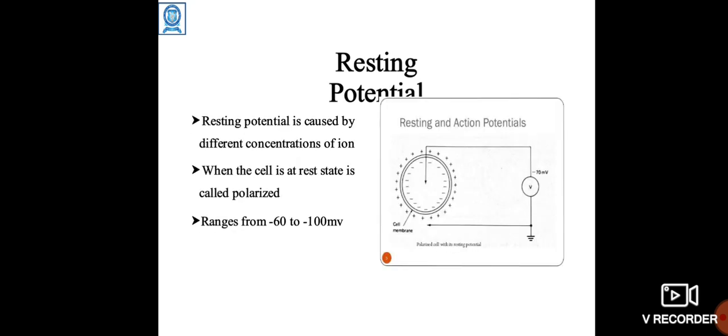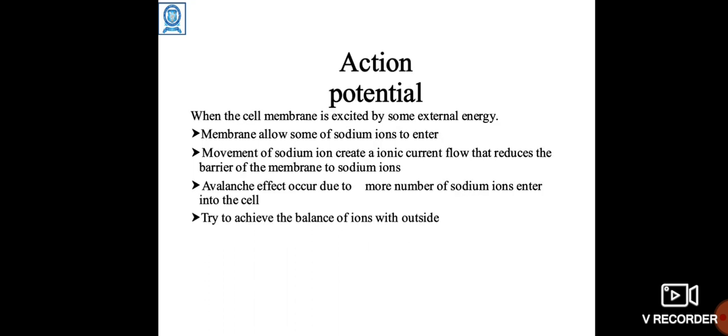Resting potential is caused by different concentrations of ions. When the cell is at rest state, it is called polarized. Ranges from -60 to -100 millivolts.